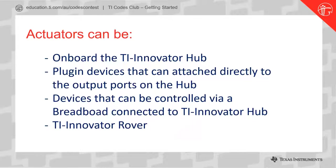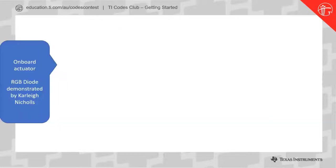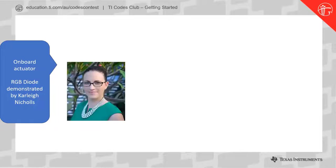There is also a completely separate machine called TI Innovator Rover, which you don't have to use for the competition but you may wish to. It's basically a robot vehicle that can drive around and do a whole range of things, with the TI Innovator Hub fitted into it directly along with the calculator for control. Let's take it back to the start, looking at onboard actuators — we'll first look at the tricolour diode: red, green, blue. That will be demonstrated by Carly Nichols from Queensland.